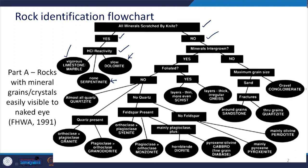This is all about when all the minerals are scratched by a knife. Now, the next branch: when they are not scratched by a knife, the next question is whether the minerals are intergrown or not. If they are intergrown, the next thing is whether they are foliated or not. If they are not foliated, and the rock is almost all quartz, you have quartzite.